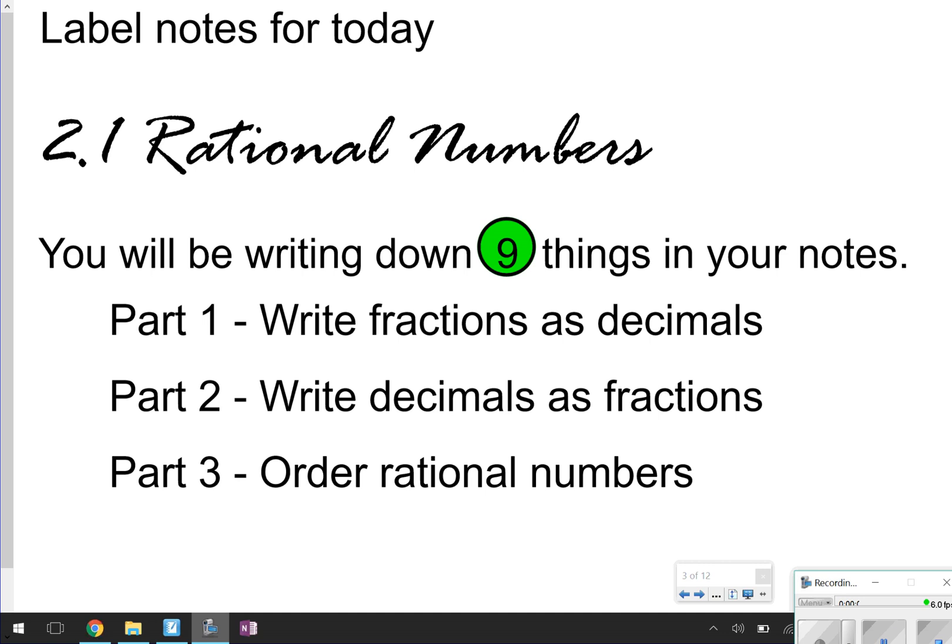Hi there, and thanks for tuning in for another episode of Math with Mullins. Today's notes are going to be labeled 2.1 Rational Numbers. Notice we are starting Chapter 2 today, so this is Chapter 2, Lesson 1, hence the 2.1. Today in your notes, you're going to be writing down 9 things, and there are 3 parts to it: writing fractions as decimals, writing decimals as fractions, and ordering rational numbers.